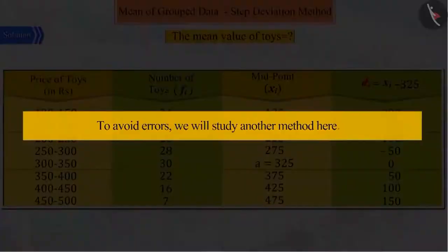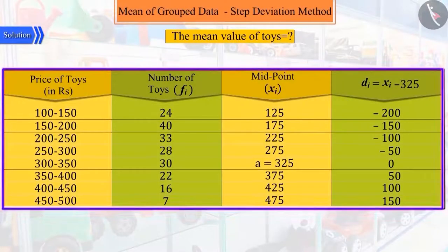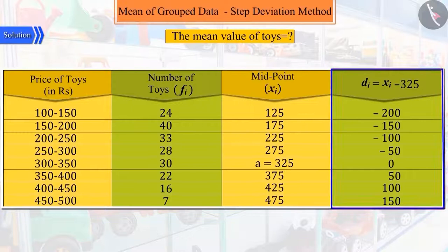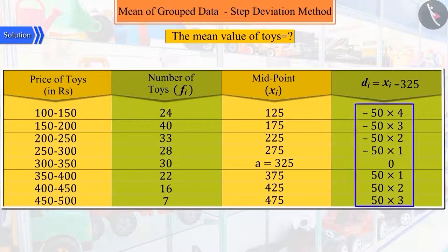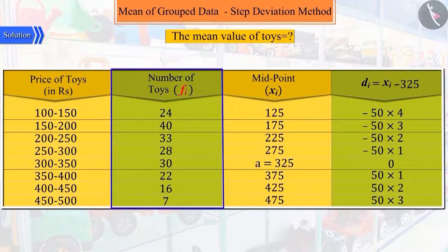Let's try to understand this. Looking at the table carefully, we can say that all the values of column 4 are multiples of 50. If all the values of column 4 are divided by 50, then we get smaller values to multiply with fi.